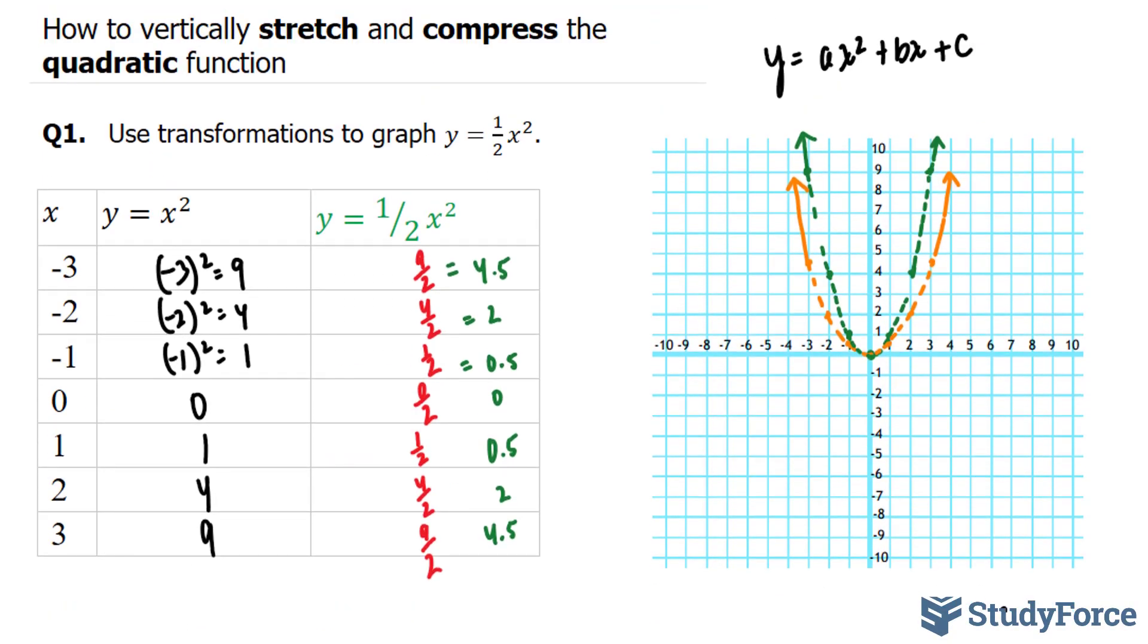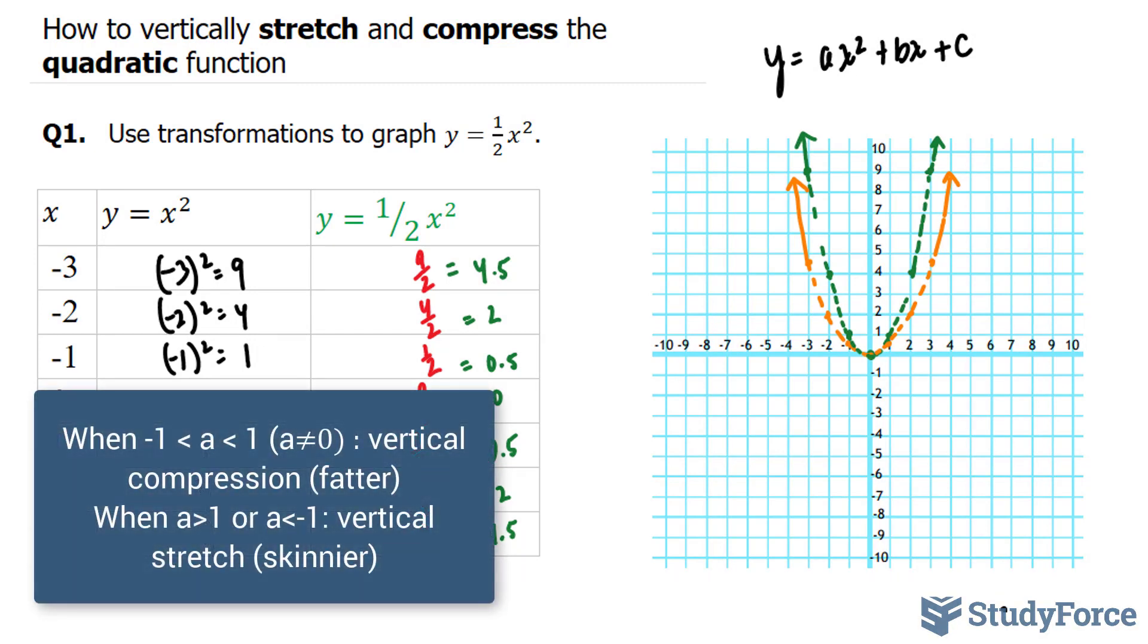So let's conclude what this a value does to our equation. When the a value is between 0 and 1, or between 0 and negative 1, you end up with a vertical compression. When your a value is anything greater than 1, or anything less than negative 1, say, for example, negative 10 or negative 20, then the graph gets skinnier. And that is called a vertical stretch. So there you have it.